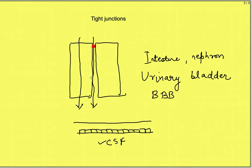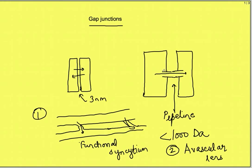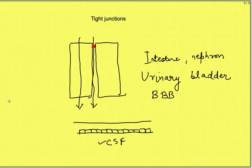So gap junctions allow transport of substances in between cells and tight junctions prevent transport of substances via paracellular route from the space in between the cells.